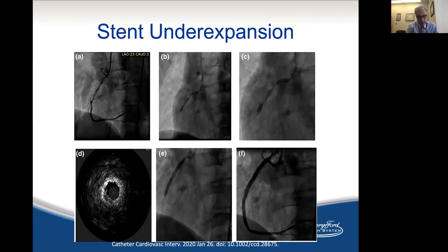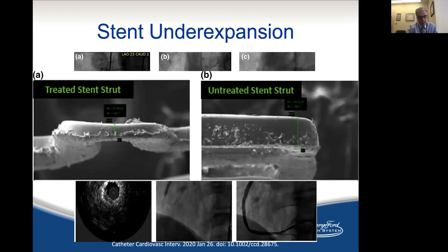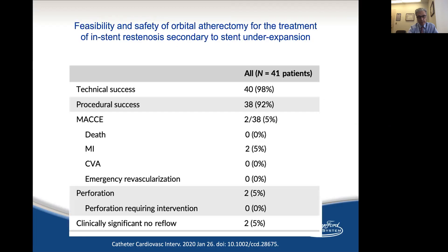This is not approved yet, but we have used orbital atherectomy in under-expanded stents with tremendous success. If you notice here, this is plaque constraining a stent. With orbital atherectomy, we were able to show — even at bench-side testing — that the orbit actually damages the stent and the plaque behind it, allowing us to expand the under-expanded stent. University of Washington colleagues and us published our initial experience in 40 patients. We only had two no-reflow events that caused periprocedural MI. Otherwise, it is pretty safe and effective.